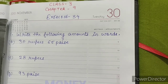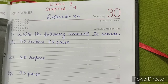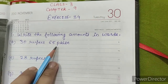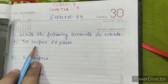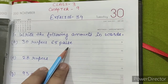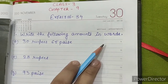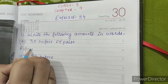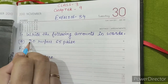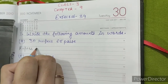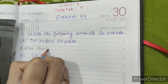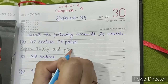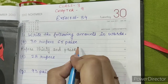Question number 1: write the following amounts in words. A. 30 rupees, 65 paise. So we have to write 30 rupees 65 paise in words. First we'll write rupees — thirty — and paise sixty-five.